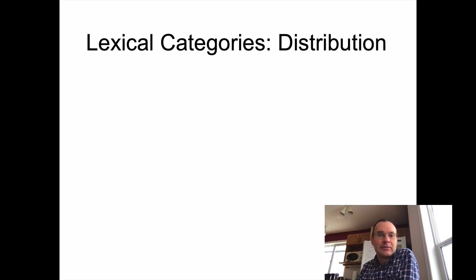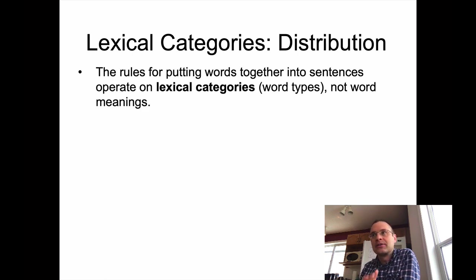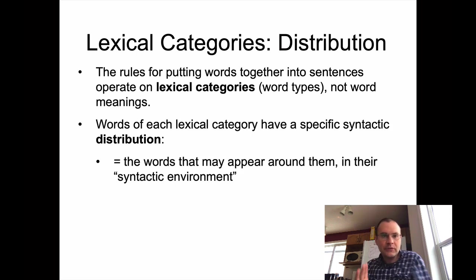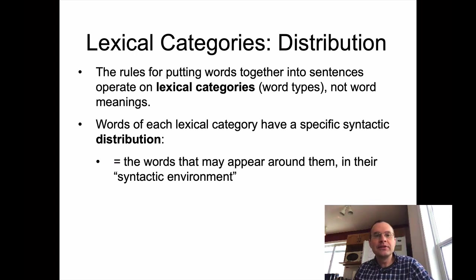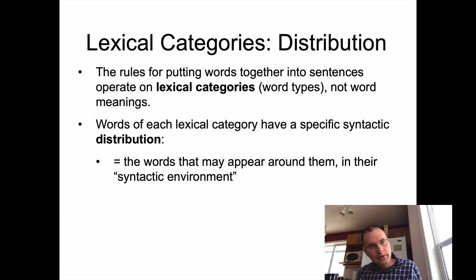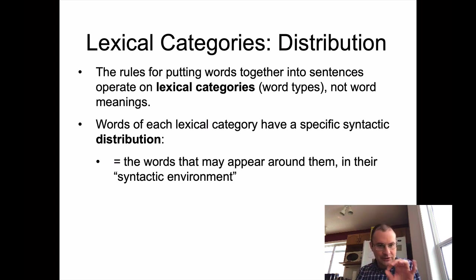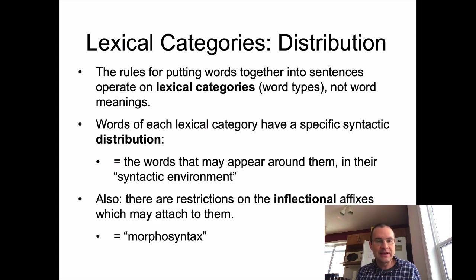Since we're not basing the rules on what words mean, what other properties do words have? Words fit into various lexical categories — each word is a member of a specific lexical category. The rules for putting words together into sentences operate on those lexical categories, those word types. They don't care about word meanings, which is how you can get these weird combinations of words. It works for linguistics examples and for poetry — language gives us this freedom.